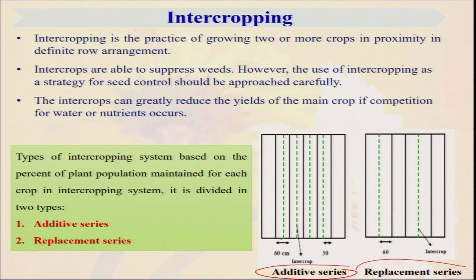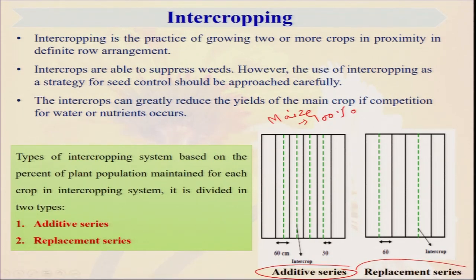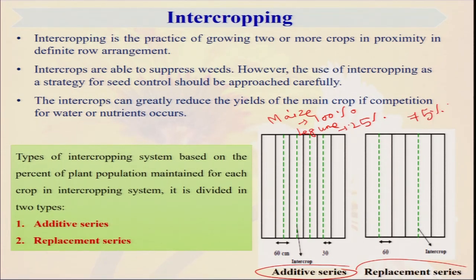There are different types of intercropping: one is the additive series and second is the replacement series. In additive series, suppose we are growing 10 lines of maize — we will not reduce the 10-line population. Our main crop population will be 100 percent; we will not reduce the population of maize. But we will adjust our crop geometry in such a way that we can grow a second crop — legume — for about 25 percent area. So our main crop is not reduced. But in case of replacement series, we will grow different types of crops in such a way that out of 100 percent, 75 percent lines are given for maize and 25 percent for soybean. By this way we are reducing some population of the major crop and in those lines we are growing some extra crop.